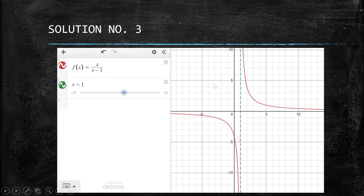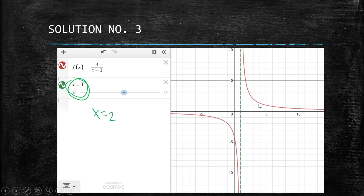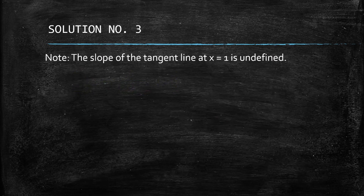To summarize: for the point, we cannot find it because the function is undefined at x = 1 and it's the vertical asymptote. For the derivative, we can find the general formula f'(x) = −4/(x − 1)², but not at that specific point. For example, at x = 2, y = 4, and we could find the tangent and normal lines using the derivative formula.